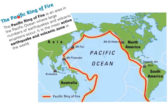The Pacific Ring of Fire is an area in the Pacific Ocean where a large number of earthquakes and volcanic eruptions occur. It is the most active earthquake and volcanic zone in the whole world. This red line on the diagram represents the Pacific Ring of Fire. An example of a volcano along the Pacific Ring of Fire that we're going to study is Mount St. Helens, which is off the coast of North America.